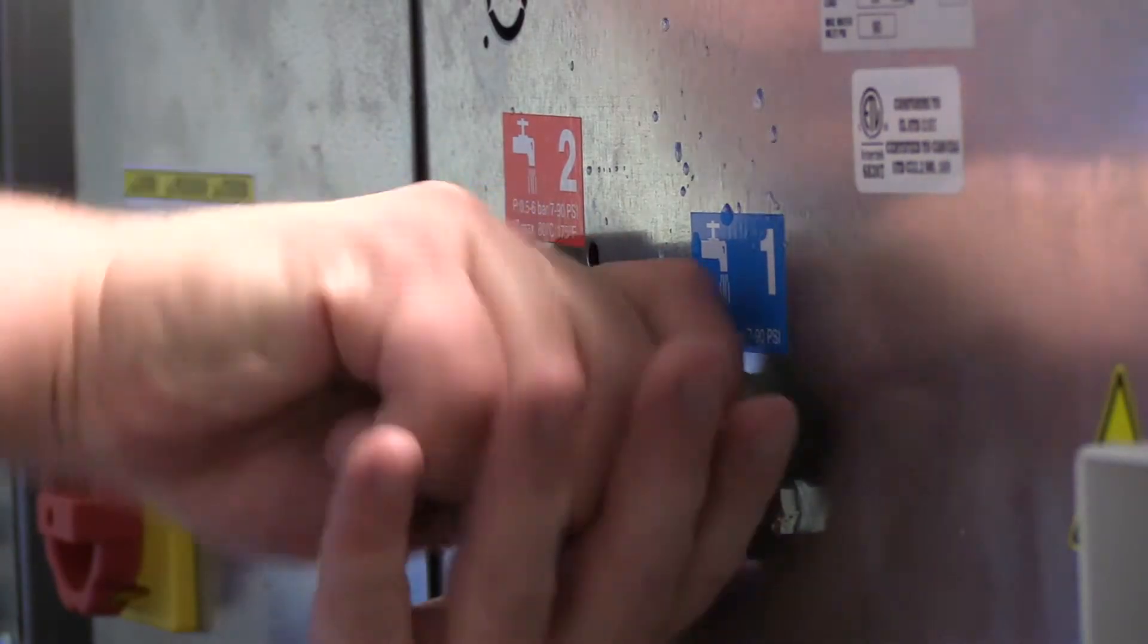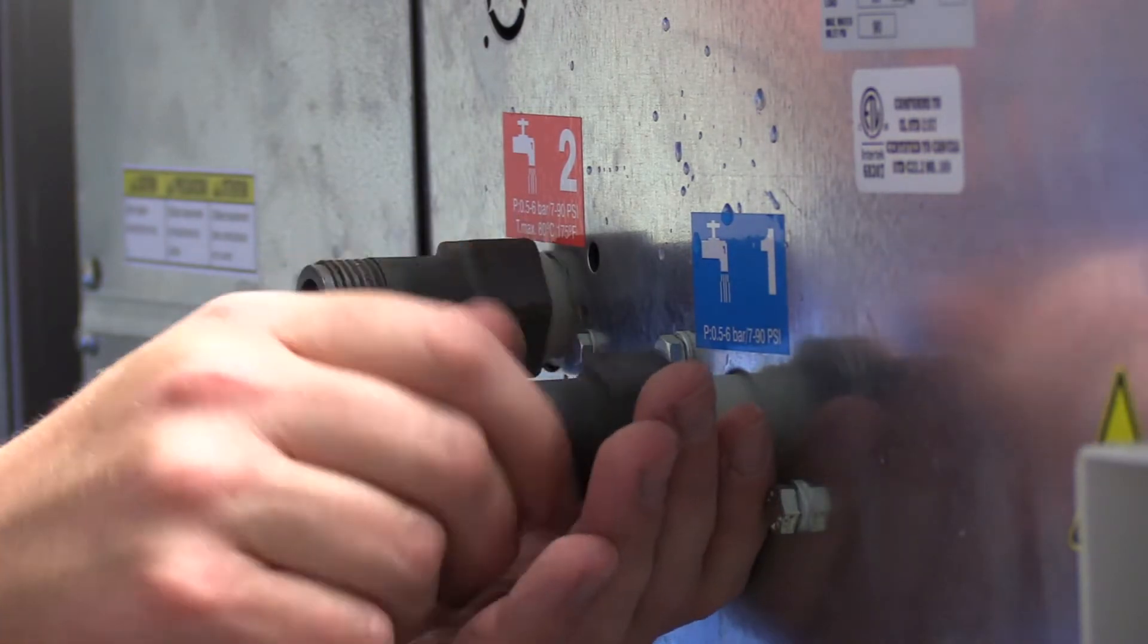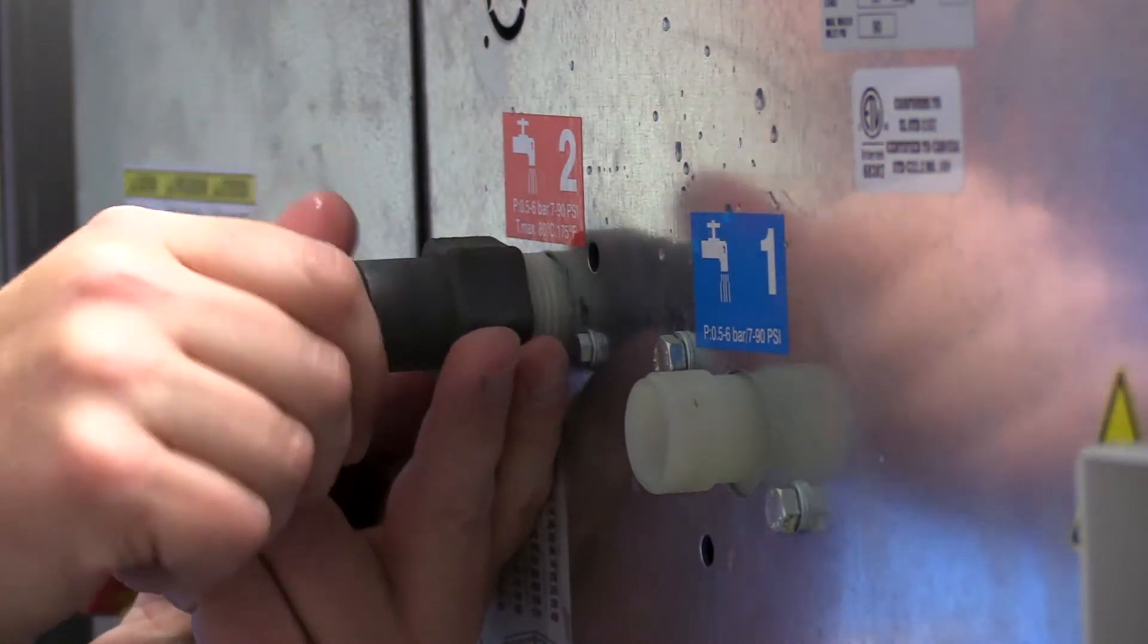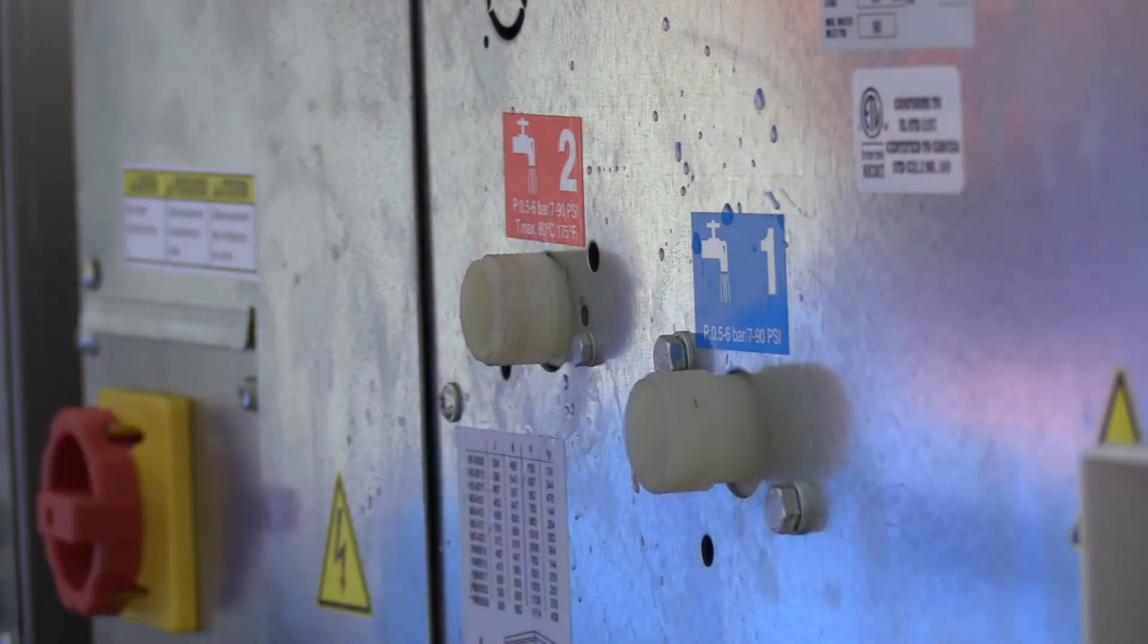Remove the filter from the gray adapters connected to the valve ports on the back of the washer and clean with water. These filters are critical to keeping your valves clean and functional.